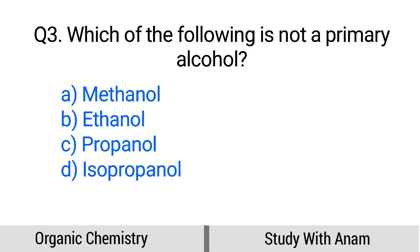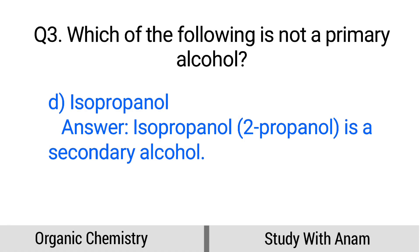Question number 3. Which of the following is not a primary alcohol? Option A: Methanol, B: Ethanol, C: Propanol, D: Isopropanol. The correct option is option D, Isopropanol. Isopropanol (2-propanol) is a secondary alcohol.